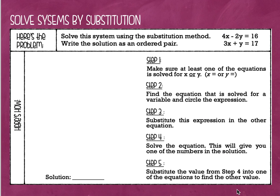Here's the problem. Solve the system using the substitution method. Write the solution as an ordered pair. We are going to look at this system of equations and just like we did with graphing, we're going to try to find an ordered pair — an x value and a y value — that will work in both of these equations when I substitute the values; it's going to make both of them true. There are a lot of steps on this one, but it really just comes down to solving an equation. So if you're good at solving equations, I think you're going to like the substitution method.